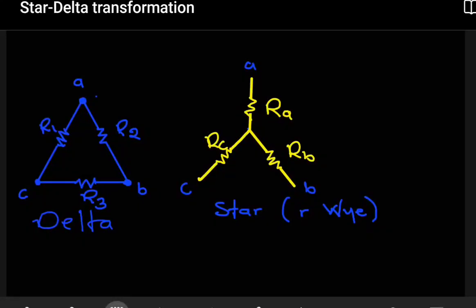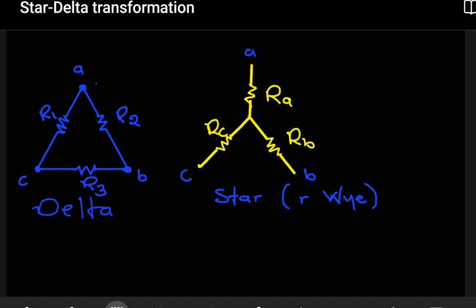In this tutorial, we're going to be looking at how you convert from a star to a delta. Previously, we saw how you convert from a delta to a star and we looked at a number of examples. So this time around, we're going to see how we do the opposite, converting from a star to a delta. Then we're going to see one example.